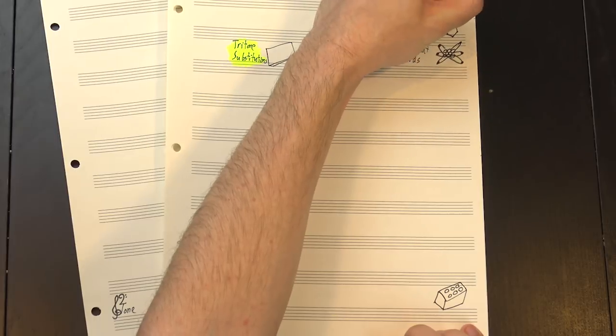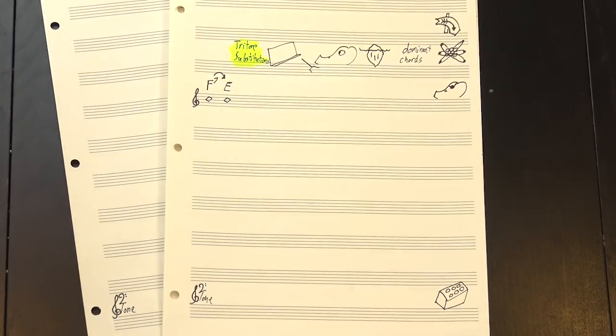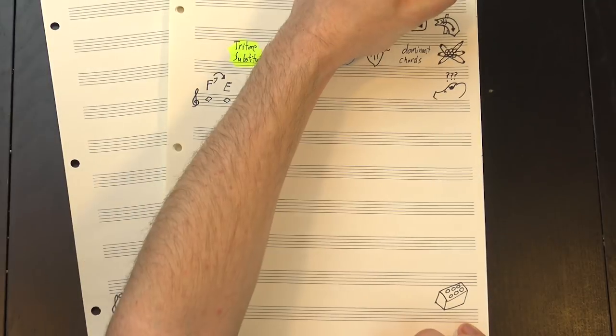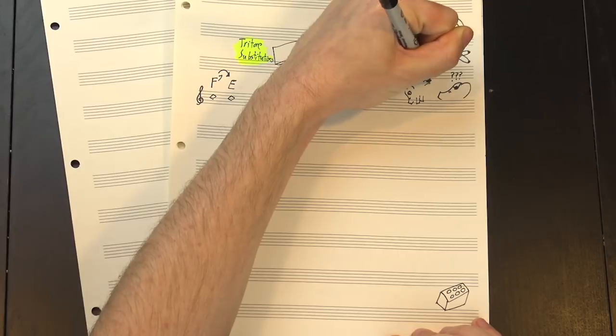This is where the dominant 7th resolves to a chord a half-step below it, and it sounds pretty cool. But how does it work? Let's take a step back and look at how normal dominant resolutions work. Typically, we expect them to resolve down a perfect 5th.